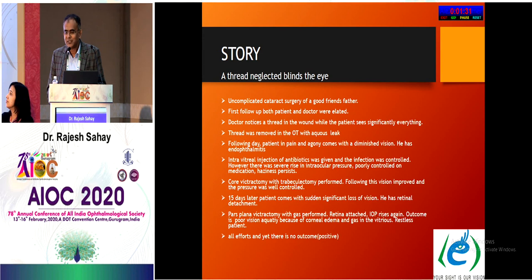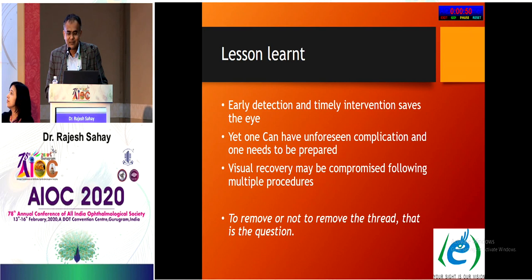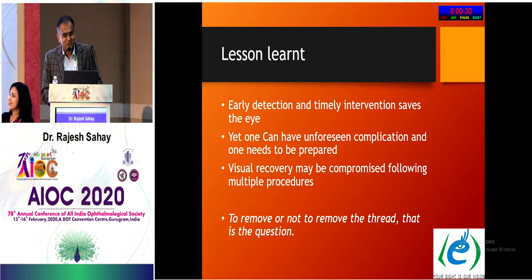The patient required RD surgery with gas tamponade since he refused oil. Due to the gas, he could not see, the bleb failed, pressure rose again, and the cornea became edematous. After the gas bubble reduced, pressure came down but the cornea remained compromised, and an endothelial graft may ultimately be required. The lesson: early detection and timely intervention saves the eye, yet unforeseen complications can arise, and one must be prepared. The question raised: to remove or not to remove the thread?